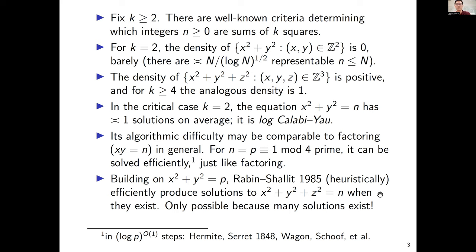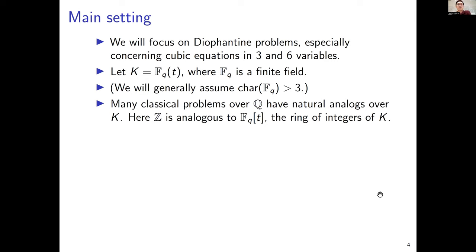Now I want to move on to the main topic, which is Diophantine problems, especially cubic ones in three and six variables. I'll explain why these two variable counts. Basically, we'll have statistical results in three variables and full non-statistical results in six variables. For simplicity, I will work over a function field k of the form F_q(t), a rational function field in one variable, where F_q is a finite field. Since I'm doing cubic problems, it's convenient to assume the characteristic of this finite field is bigger than three.